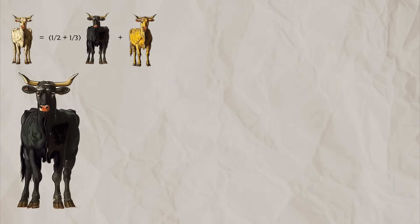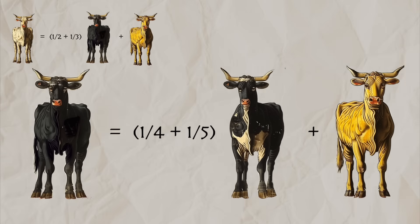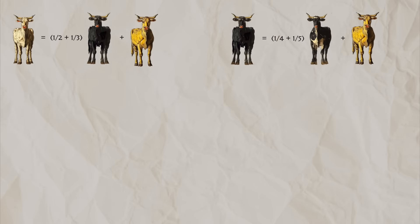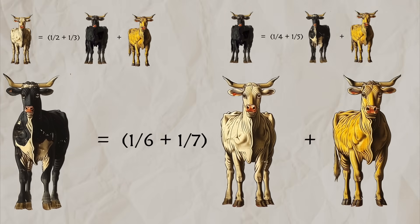While the black were equal to the fourth part of the dappled and a fifth, together with, once more, the whole of the yellow. Observe further that the remaining bulls, the dappled, were equal to a sixth part of the white and a seventh, together with all of the yellow.